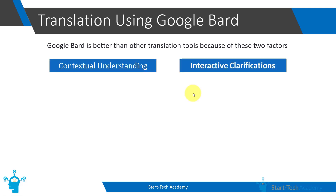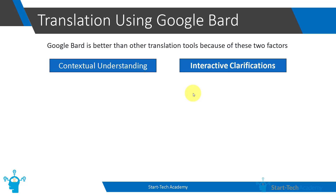The first one is contextual understanding. Google Bard understands the context of the conversation. You can provide the background or cultural context. You can tell it that the conversation is between such and such people, and the scenario in which the conversation is happening, and based on that Google Bard will do the translation. Such contextual understanding is not present in tools like Google Translate.